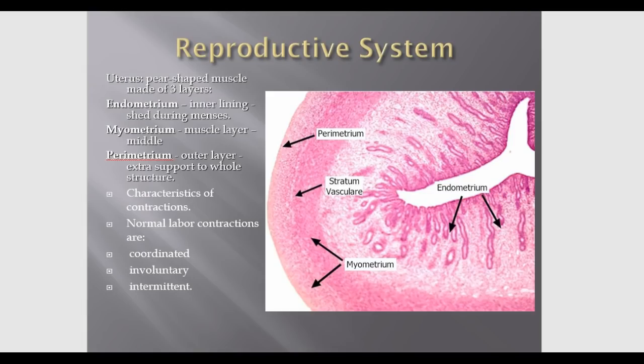Starting with the reproductive system: the uterus is a pear-shaped, upside-down muscular organ with three layers. Working from inner to outer, you have the endometrium — the inner lining that sheds during menstruation — the myometrium, which is the more muscular layer, and the perimetrium, the outer layer that provides support. The uterus will contract during labor and there are different characteristics of contractions we want to discuss.